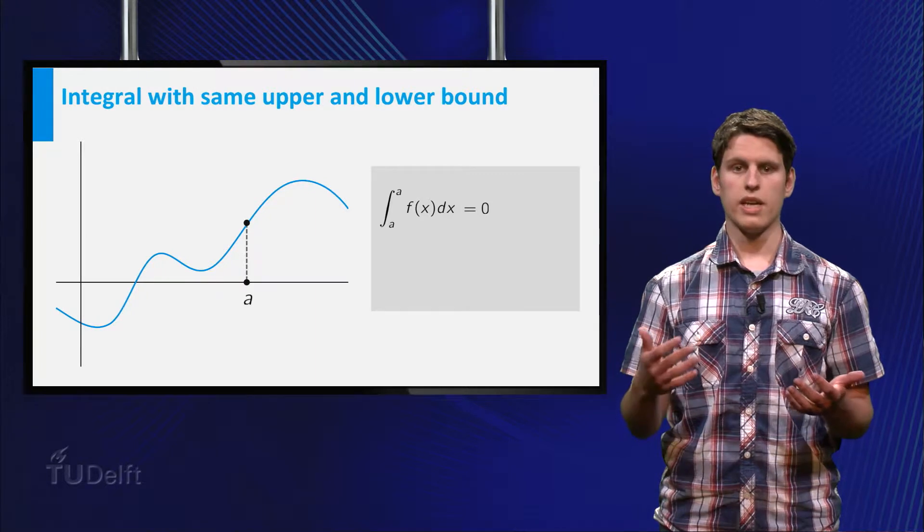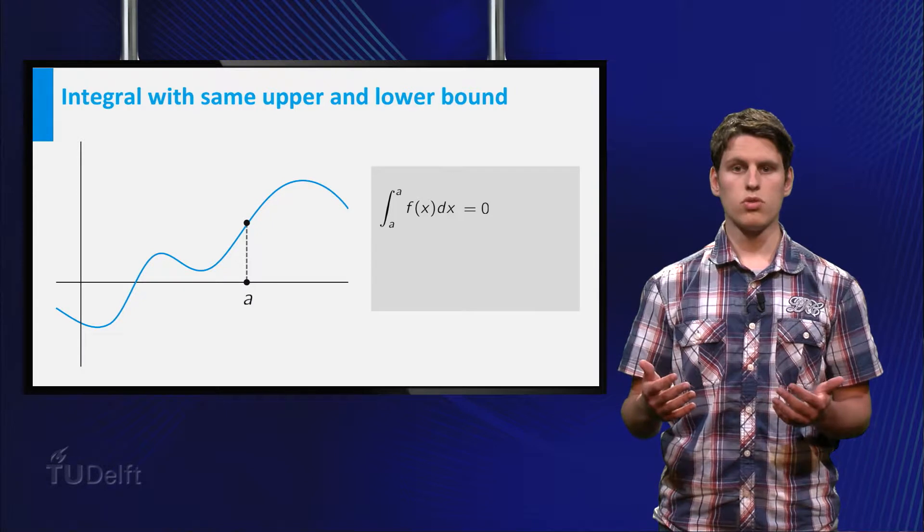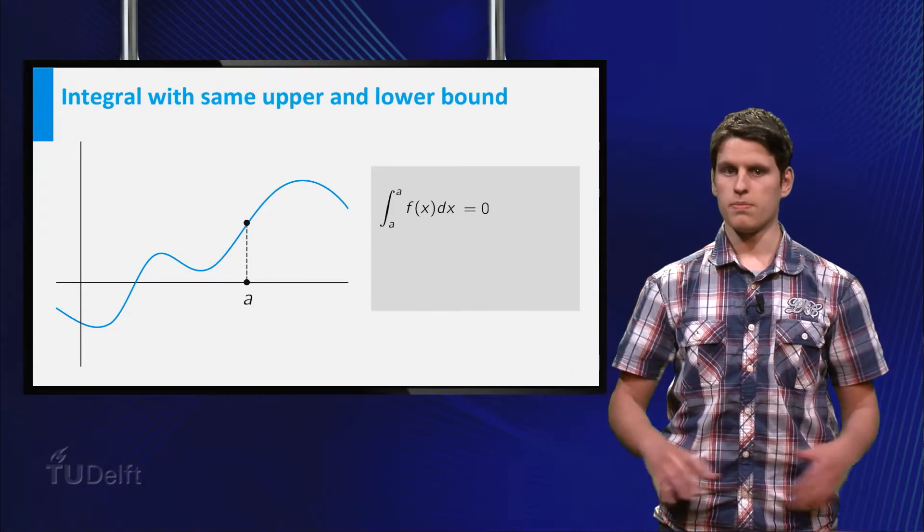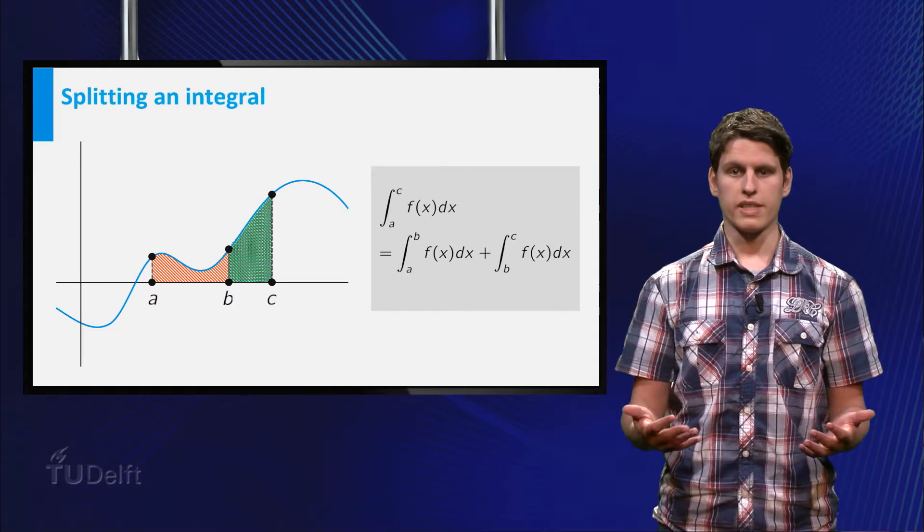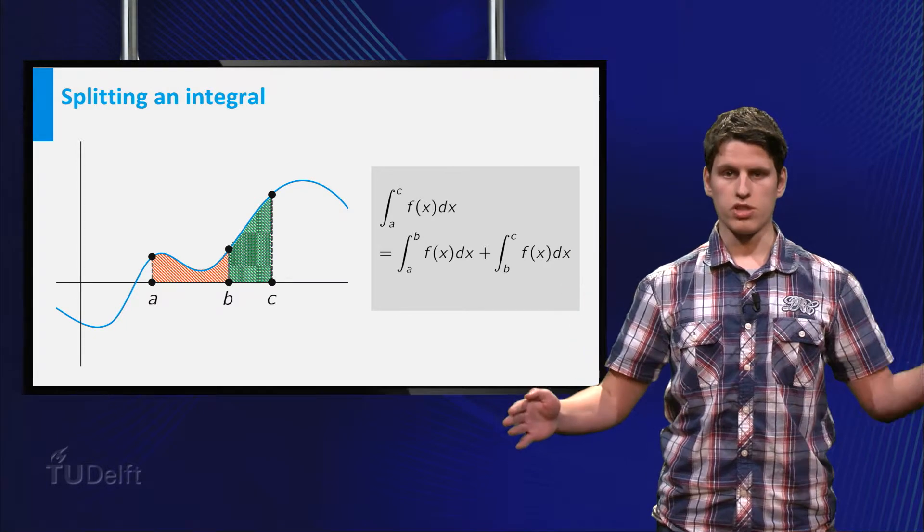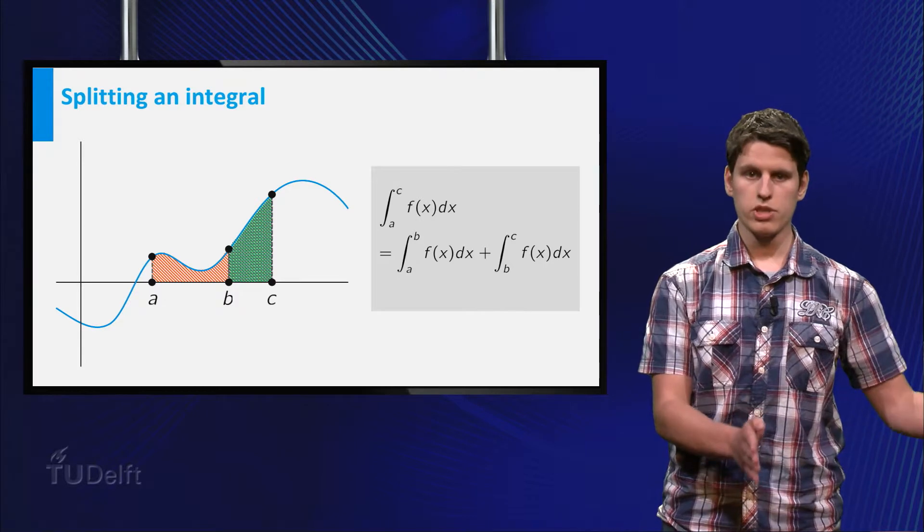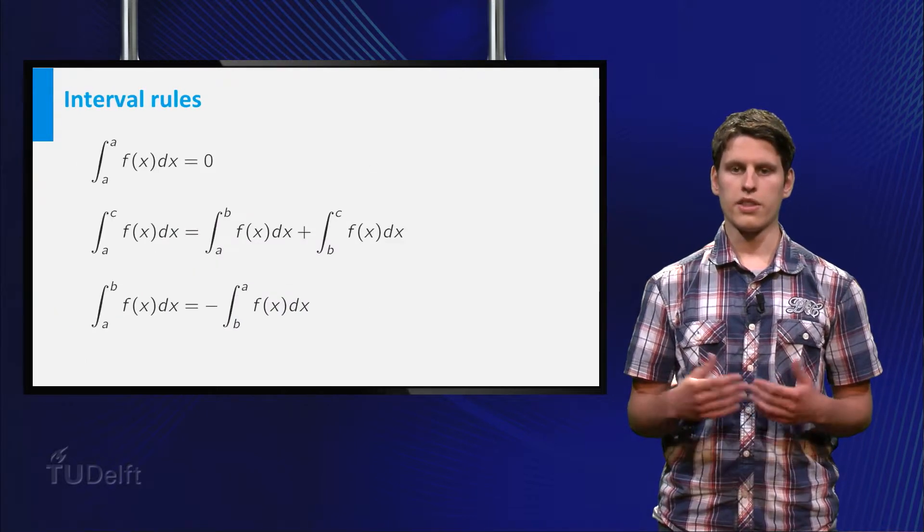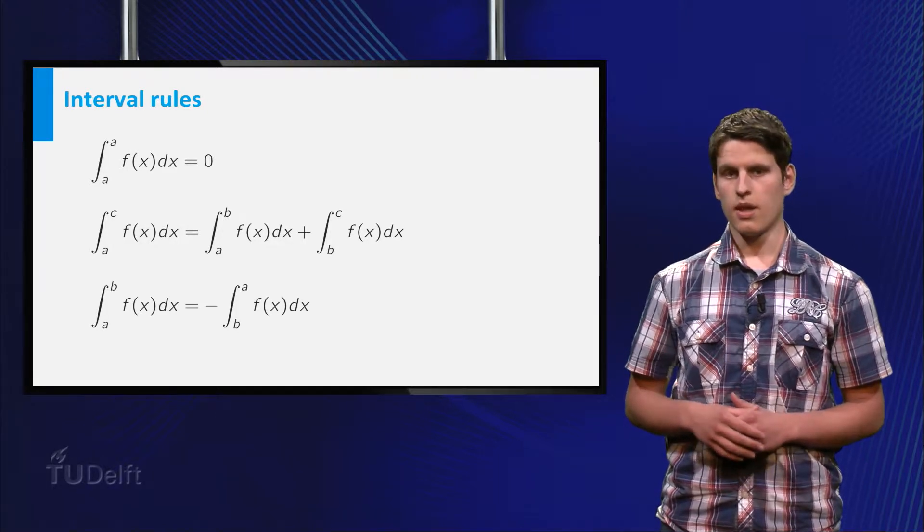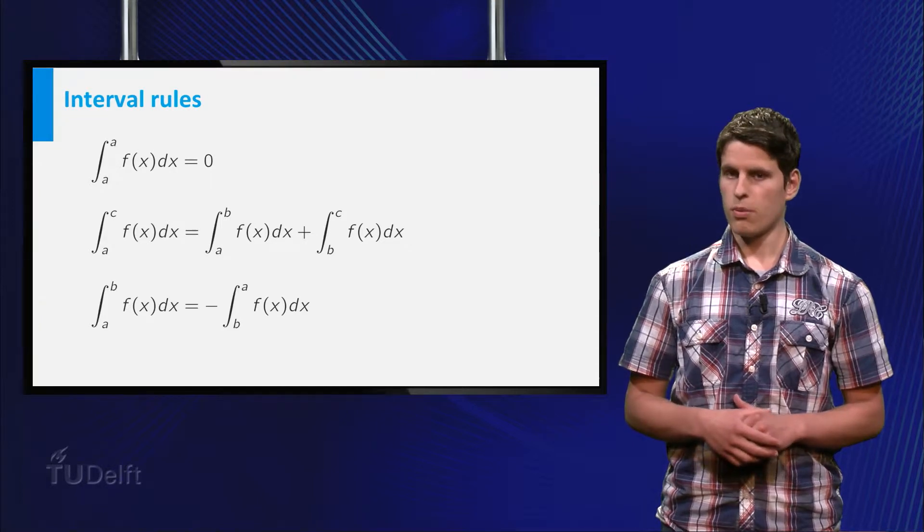Our first set of rules is about the interval of the integral. The integral of any function from a to a is always equal to zero. We can also split an integral. The integral of a function f from a to c equals the integral from a to b plus the integral from b to c. And the last rule, the integral of f from a to b equals minus the integral of f from b to a.